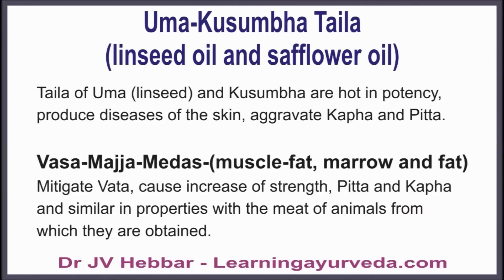Oil of Umma, generally correlated to linseed oil, is hot in potency and may cause skin diseases while aggravating kapha and pitta. Next, Vasa, Maja, and Medas — that is muscle fat, marrow, and fat collected from animals — mitigate vata, cause increase of strength, increase pitta and kapha, and are similar in properties to the meat of the animals from which they are obtained.